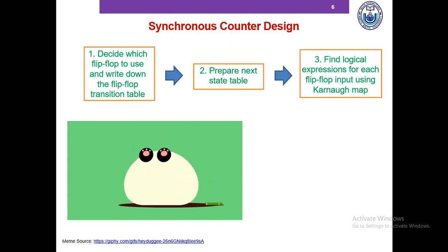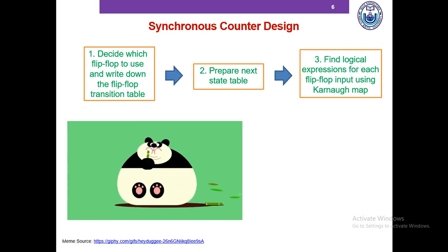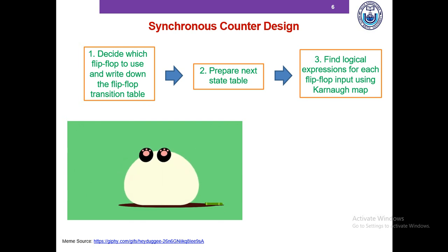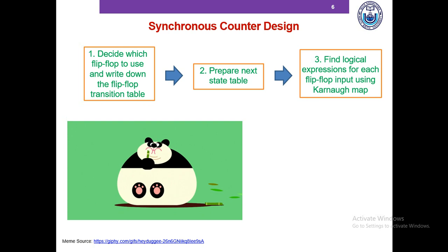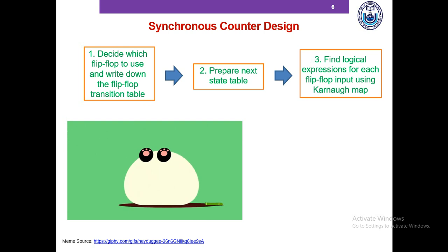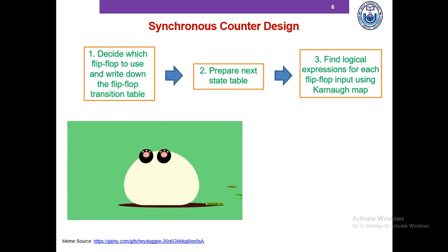I'm now going to give you a high-level overview of the design procedure. First, we decide which flip-flop to use and write down the flip-flop transition table. Next, we prepare the next state table. Lastly, we find the logical expressions for each of the flip-flop inputs using Karnaugh maps.